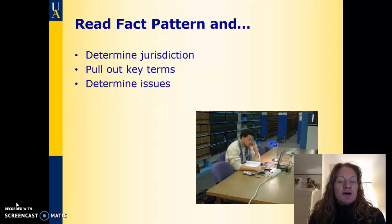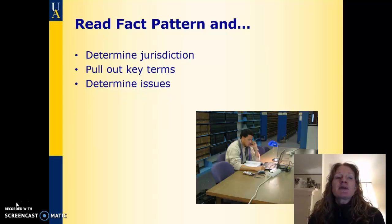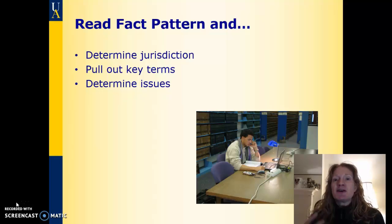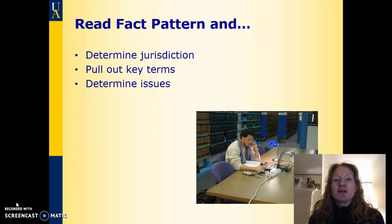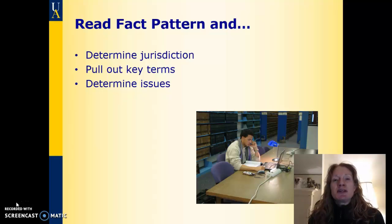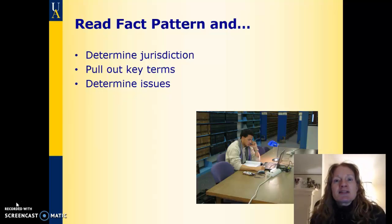When you start a legal research problem, usually in law school you're given a fact pattern, a written fact pattern. You have to read your fact pattern and determine what the jurisdiction is — what is the law you're going to be researching: federal law, state law, which state, or the law of another country. Then you pull key terms out of your fact pattern to use as search terms when you search your databases for case law, secondary sources, and all that other good stuff.